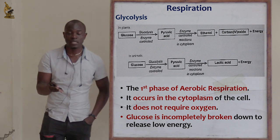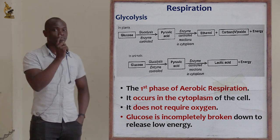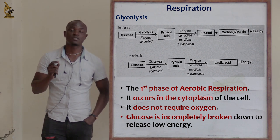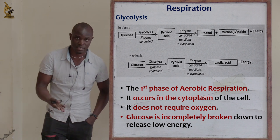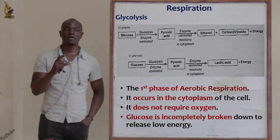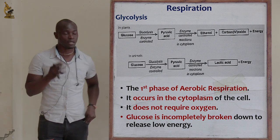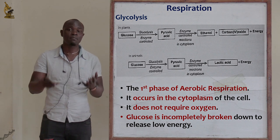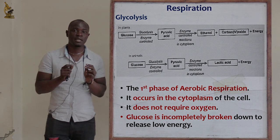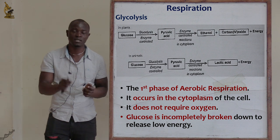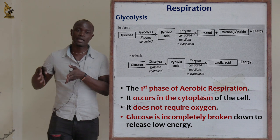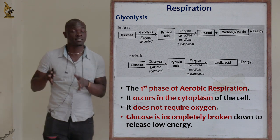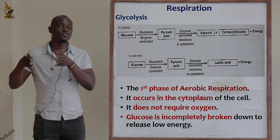In plants, pyruvic acid is broken down to form ethanol, carbon dioxide, and energy. In animals, it's the same process but instead of ethanol, pyruvic acid is broken down to form lactic acid and energy only — there is no carbon dioxide produced in animals. This energy is very low because glucose is broken down in the absence of oxygen, meaning incomplete breakdown.